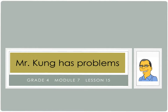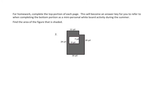Hello, and welcome to another episode of Mr. Kung Has Problems. Tonight we're working on Module 7, Lesson Number 15, and today we are creating and determining the area of composite figures. Composite figures are figures that are not the simple figures we remember from earlier in geometry, like squares, rectangles, and triangles, but instead are figures made up of those simpler figures that we might see in the real world.